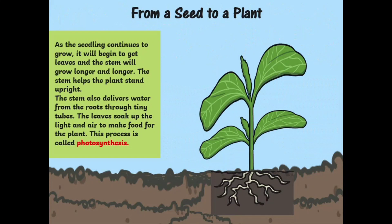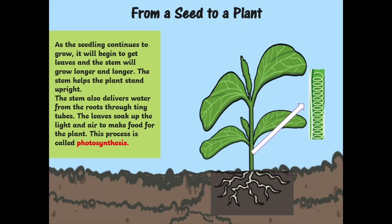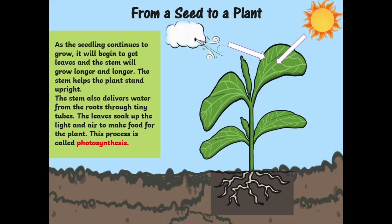If the seedling continues to grow, it will begin to get leaves and the stem will grow longer and longer. The stem helps the plant stand upright. The stem also delivers water from the roots through tiny tubes, which is called xylem. The leaves soak up the light and air to make food for the plant. This process is called photosynthesis.